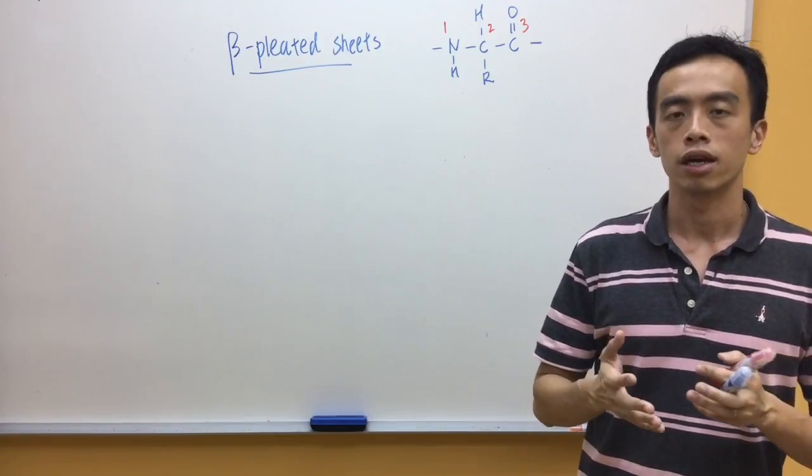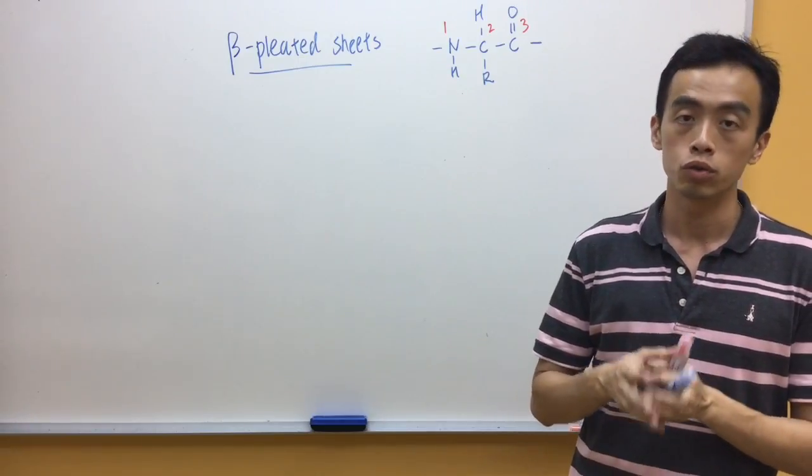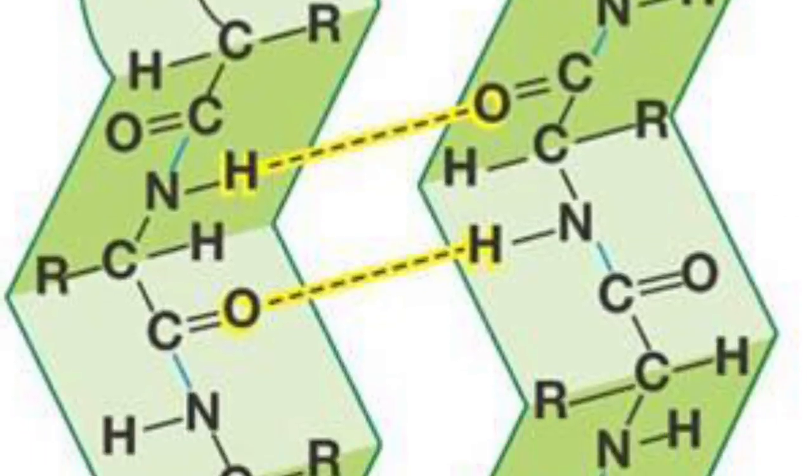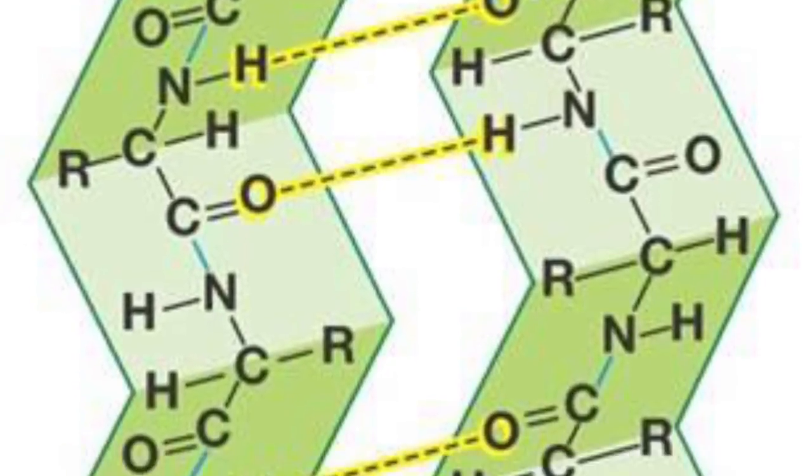Now, beta-pleated sheets, again, is considered as a secondary structure because it's held together by hydrogen bonds between peptide linkages. Now, if you take a look at the structure for beta-pleated sheets, it kind of looks like making meat before you cook it, before you cook instant noodles.